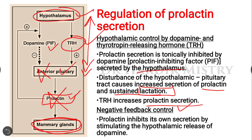Prolactin inhibits its own secretion by stimulating the hypothalamic release of dopamine. This dopamine release, stimulated by prolactin, inhibits the anterior pituitary gland and ultimately stops prolactin secretion.